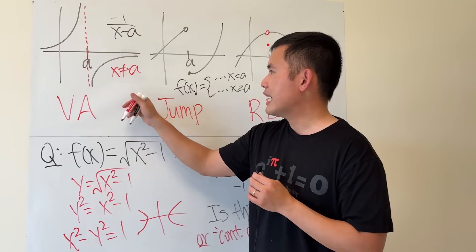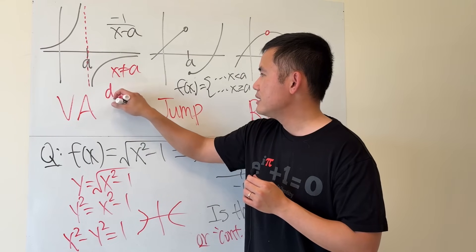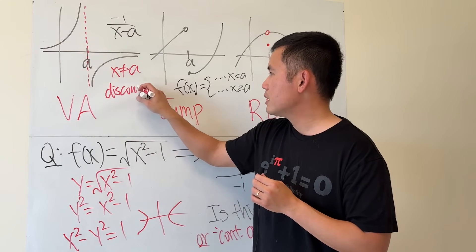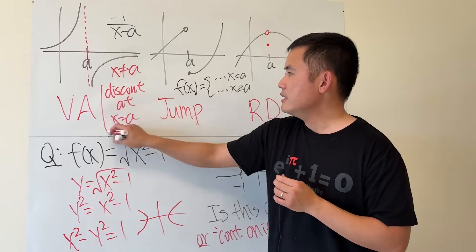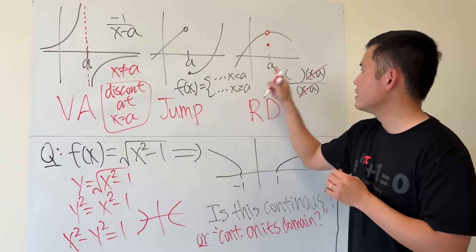We're just saying x is not, I'll just write this down. This is discontinuous at x equal to a. Right? This is okay. And it's same thing like this. Same thing like this.